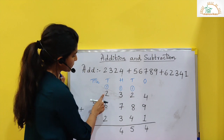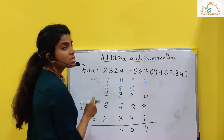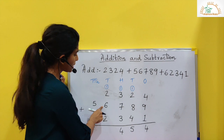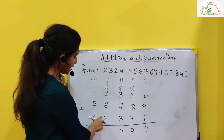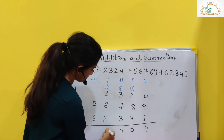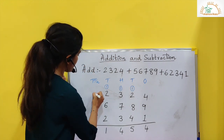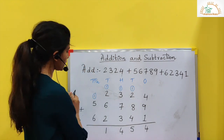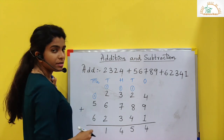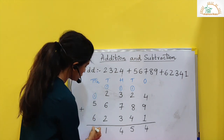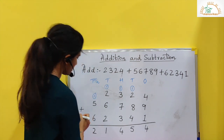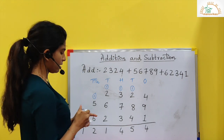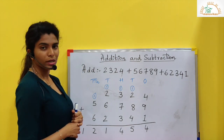1 plus 3 is 4. 4 plus 7 is 11. 11 plus 3 is 14. So I write 4 here, 1 gets carried over. Now 1 plus 2 is 3. 3 plus 6 is 9, then 10, then 11. So I write 1 here, 1 gets carried over. Now 6 plus 5 is 11, plus 1 is 12. So this is the answer we get after addition.